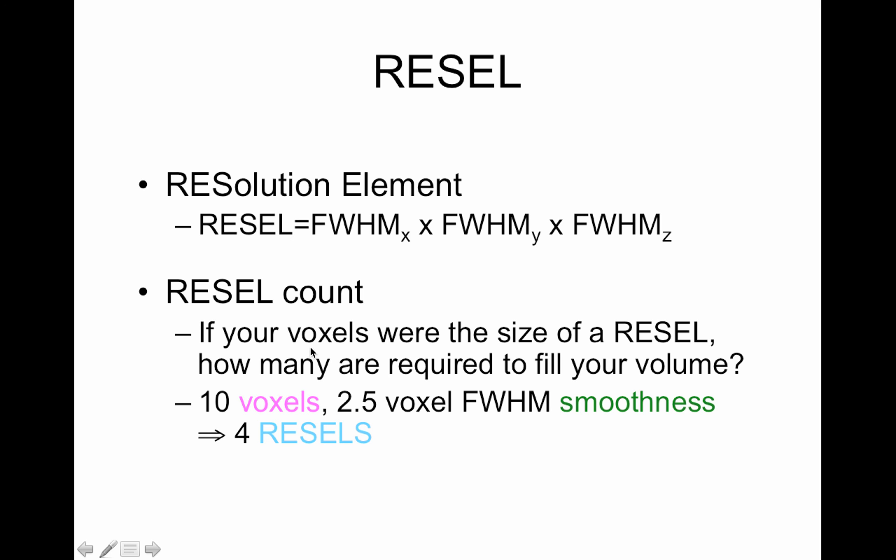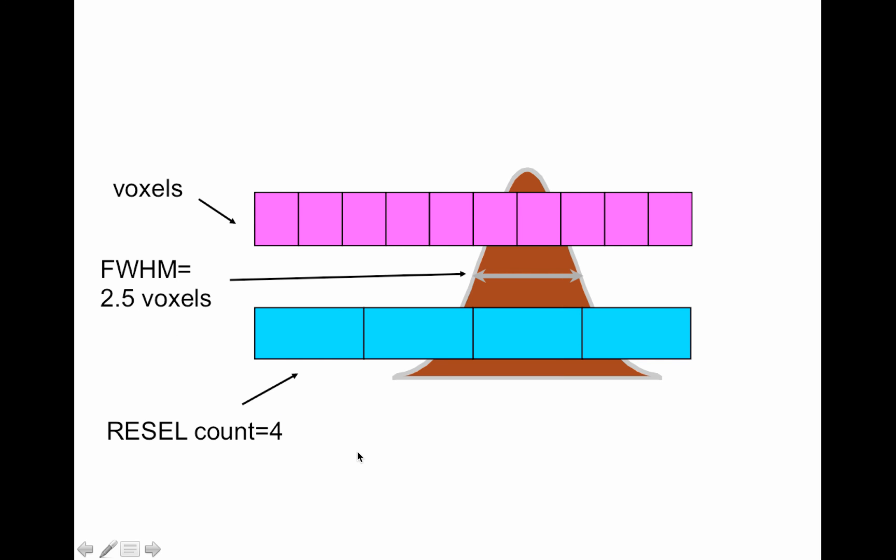The RESEL count is if your voxels were the size of a RESEL, how many voxels are required to fill your volume. So if you have 10 voxels and a two and a half voxel full width half maximum smoothness, that means you have four RESELs. Let me show you in a little picture.